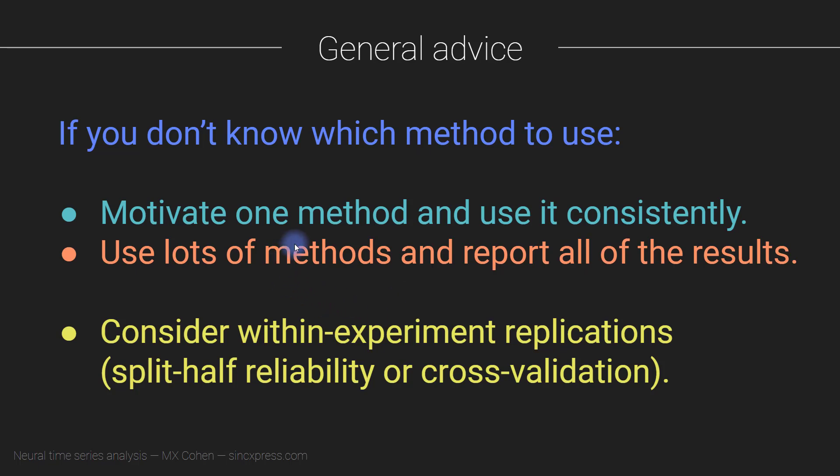So now the idea is that you're potentially overfitting some those 10 data sets, but then you're applying the methods, the protocols, the analysis procedures to the 30 data sets that you haven't yet analyzed. That would also be a valid way of doing within-experiment replications or cross-validation.